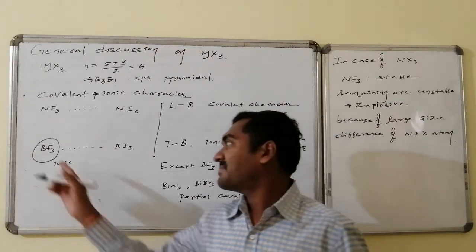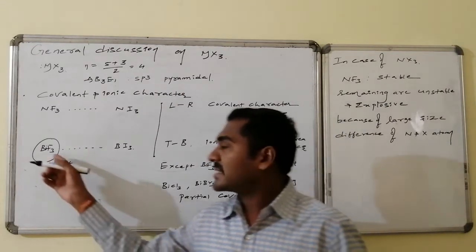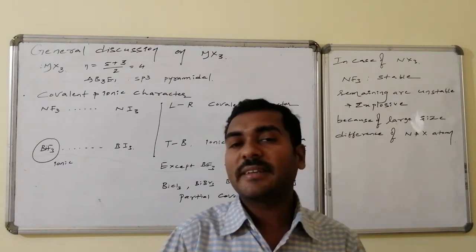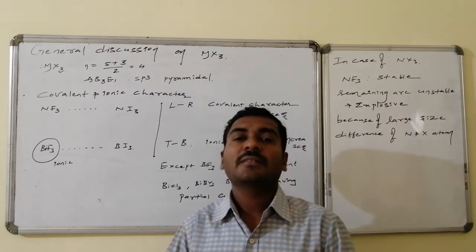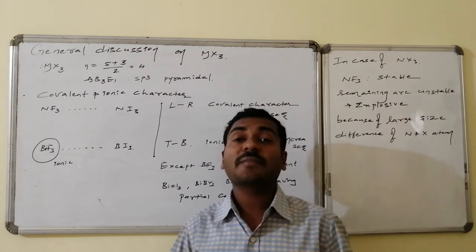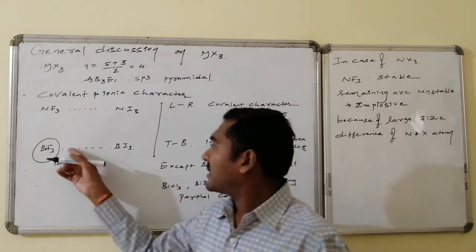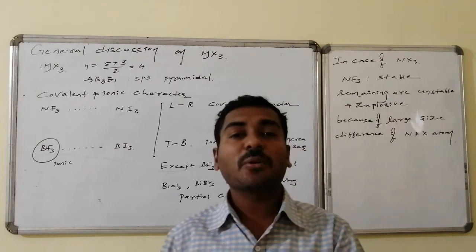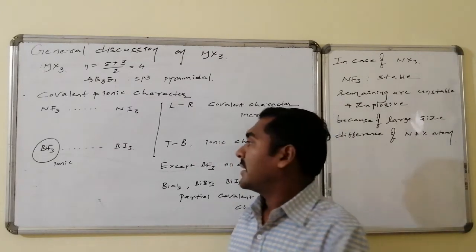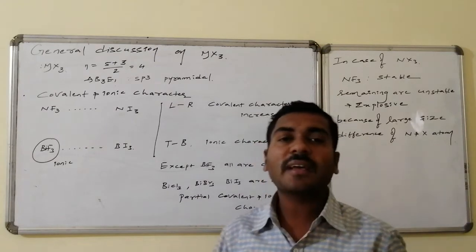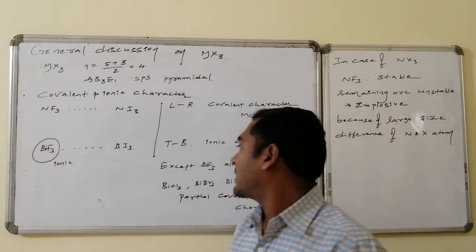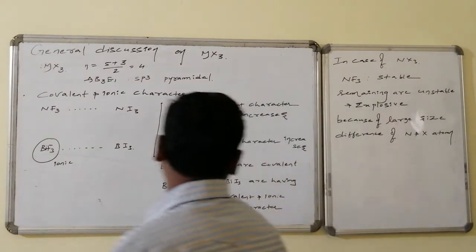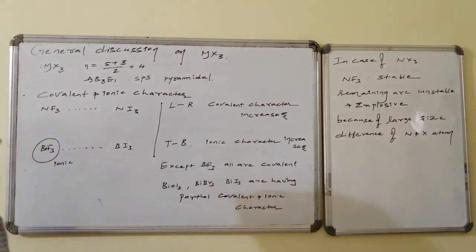The most ionic is bismuth trifluoride — it has the highest ionic character. Out of all varieties of trihalides, bismuth trifluoride is completely ionic, while remaining compounds have either covalent character or partial covalent character. Bismuth trichloride and bismuth tribromide have partial covalent as well as partial ionic character. Except these, all remaining trihalides are covalent in nature.